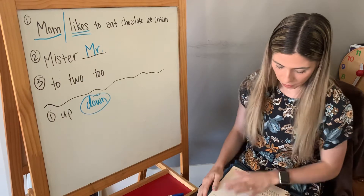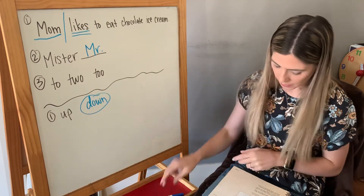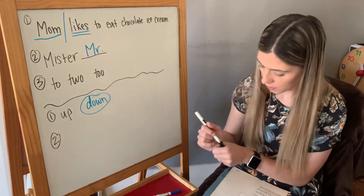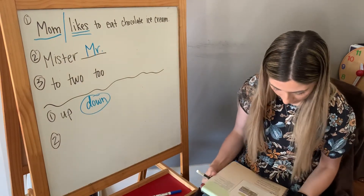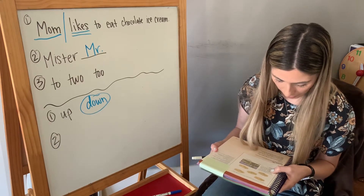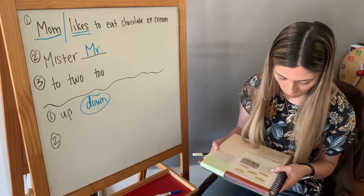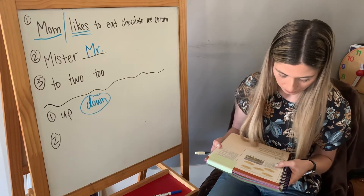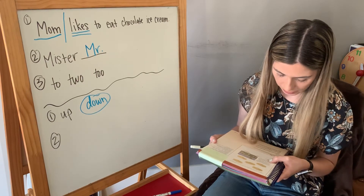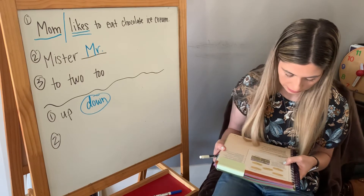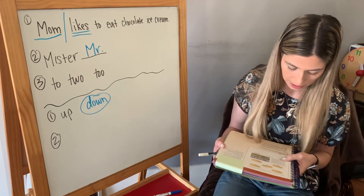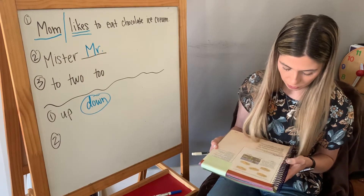Then section two. Section two says: Clingman's Dome is the highest point in the Smoky Mountains. The steep hike to the top is about one half mile long. Look at the picture, imagine that you are there. Make a list of nouns that you see, make a list of the verbs or actions that you see or do, and make a list of the adjectives that describe the nouns you see.